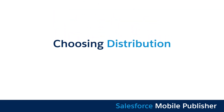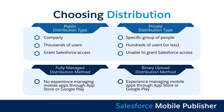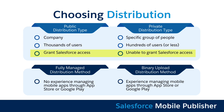Now let's think about your business requirements when choosing your distribution type. One: will you distribute your app to a company or a specific group of people? Two: will you distribute your app to hundreds of users or thousands of users? Three: are you able to grant Salesforce access to your app stores? Four: do you have experience with app publication through app stores?